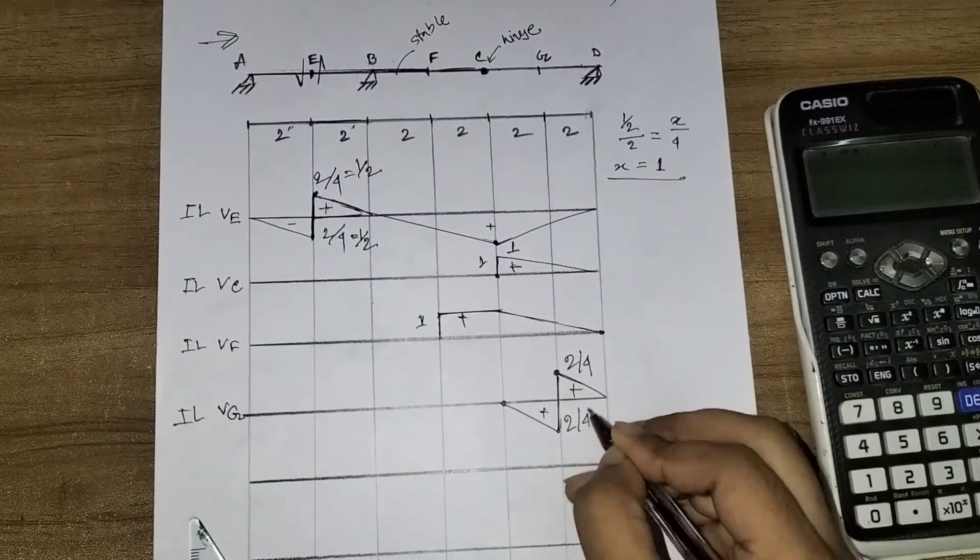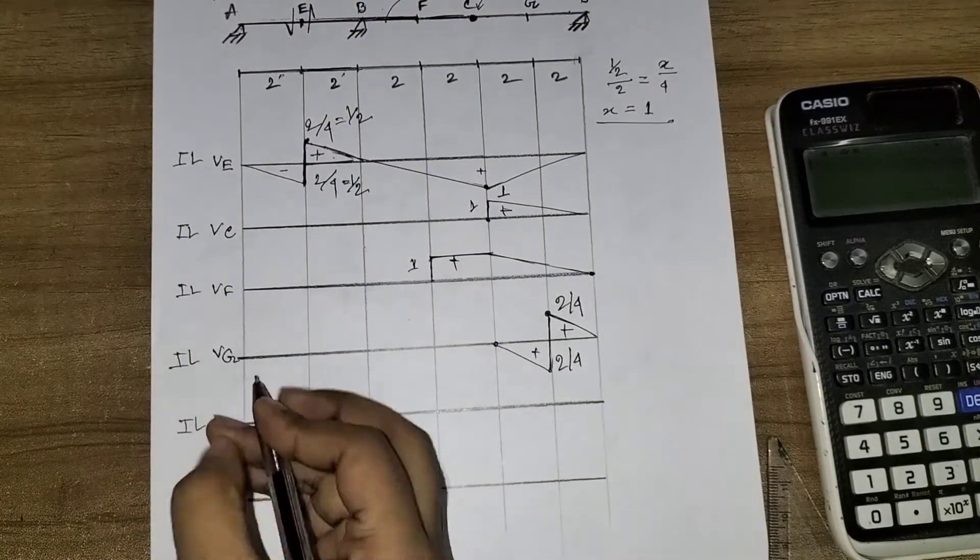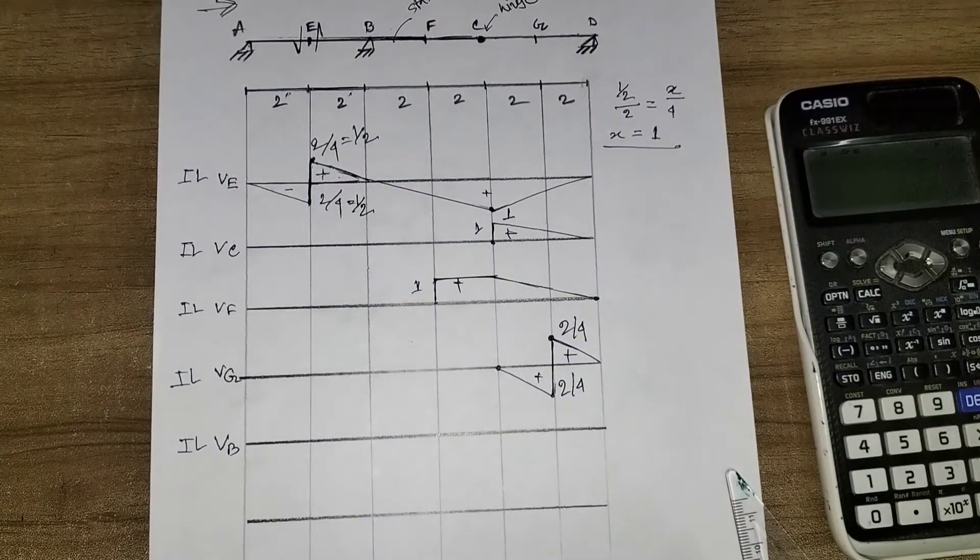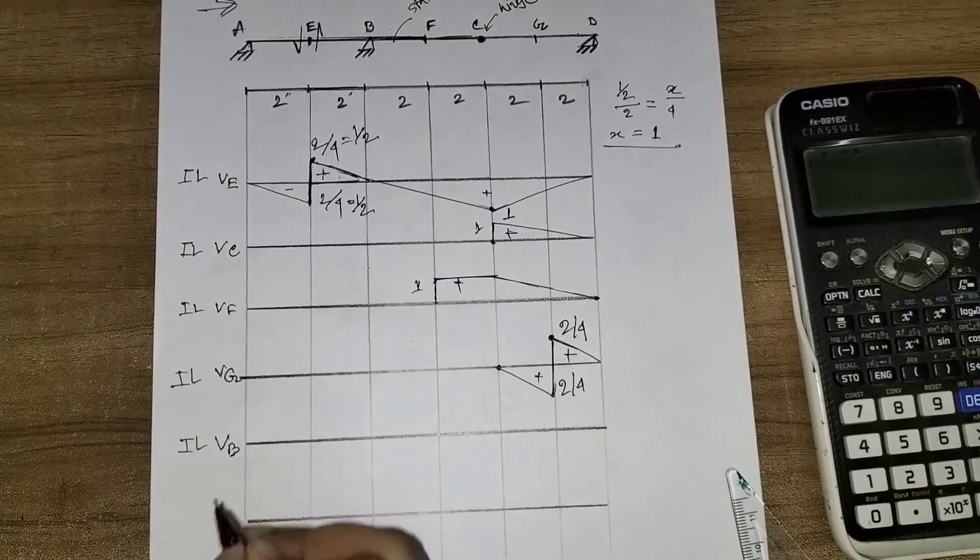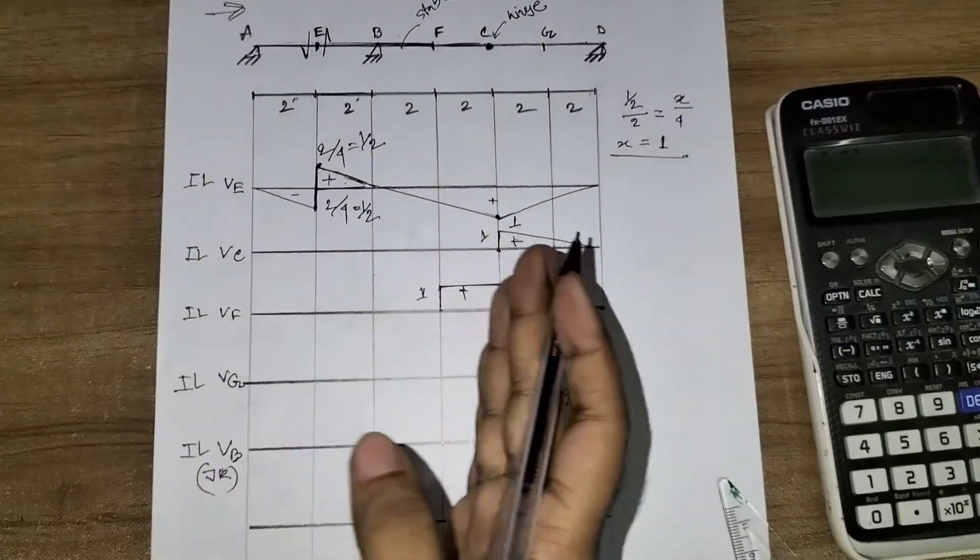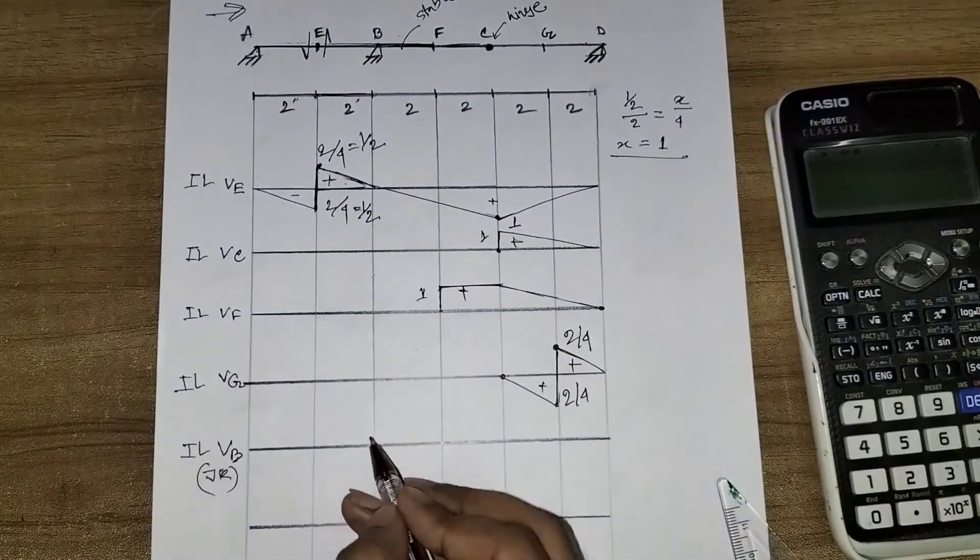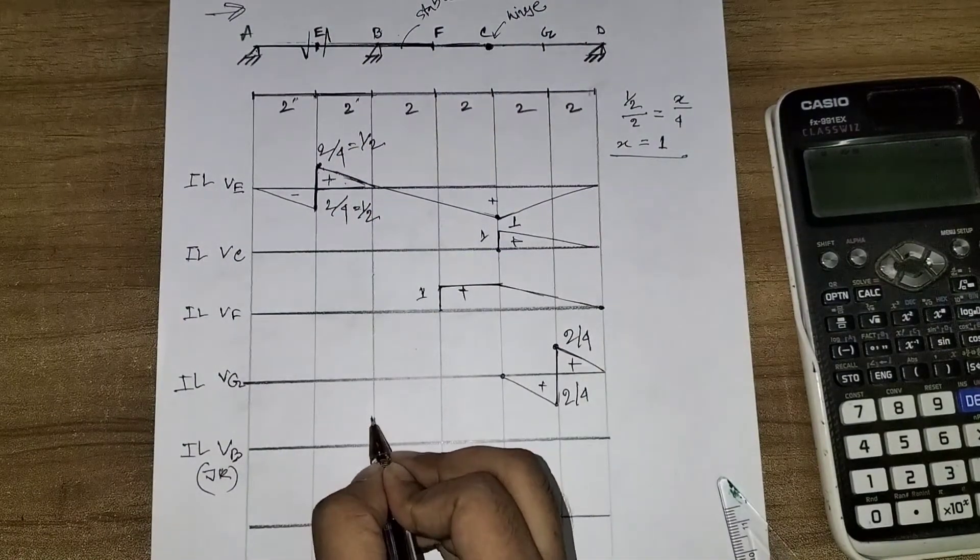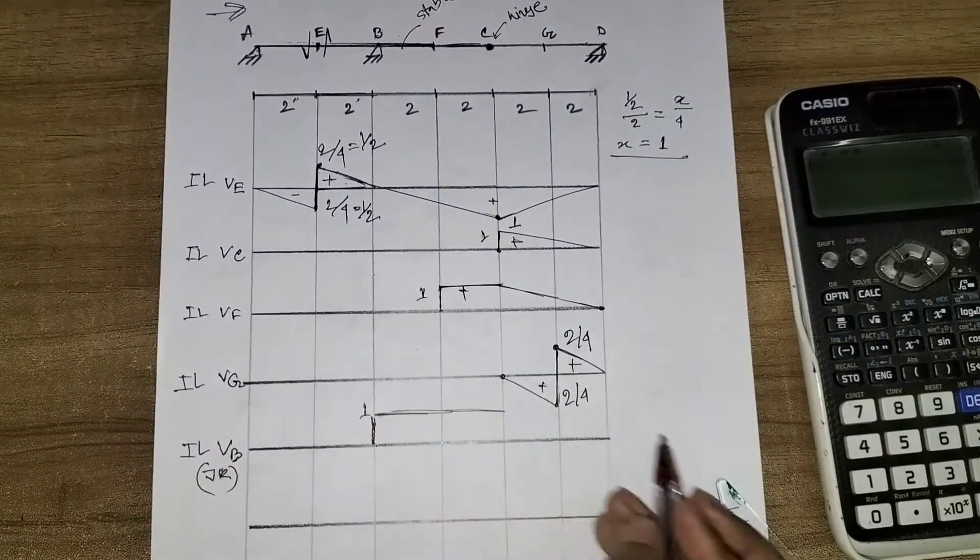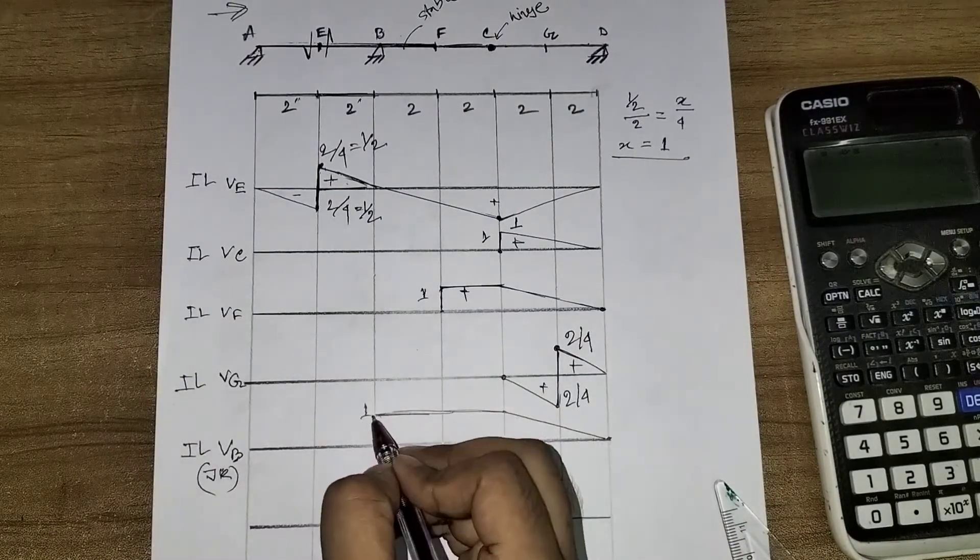Then I will draw point B, VB. At the support, the load gives one unit in the upward direction.